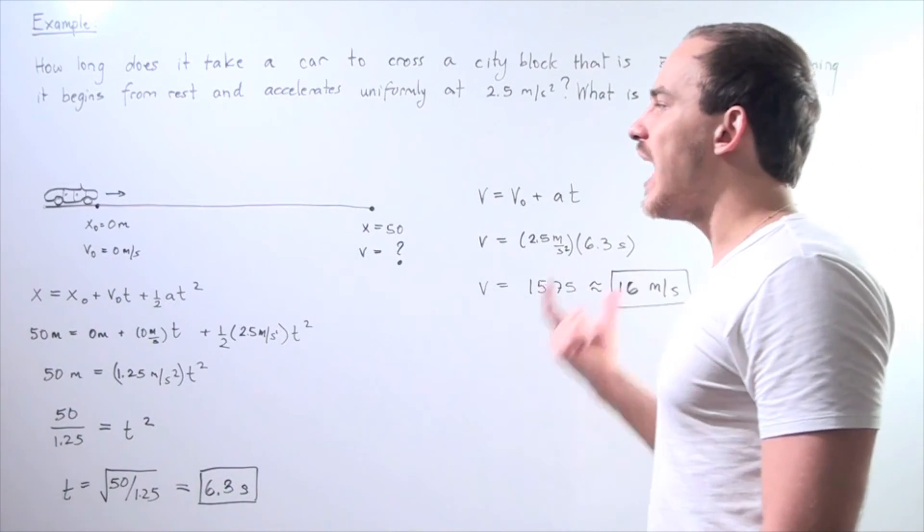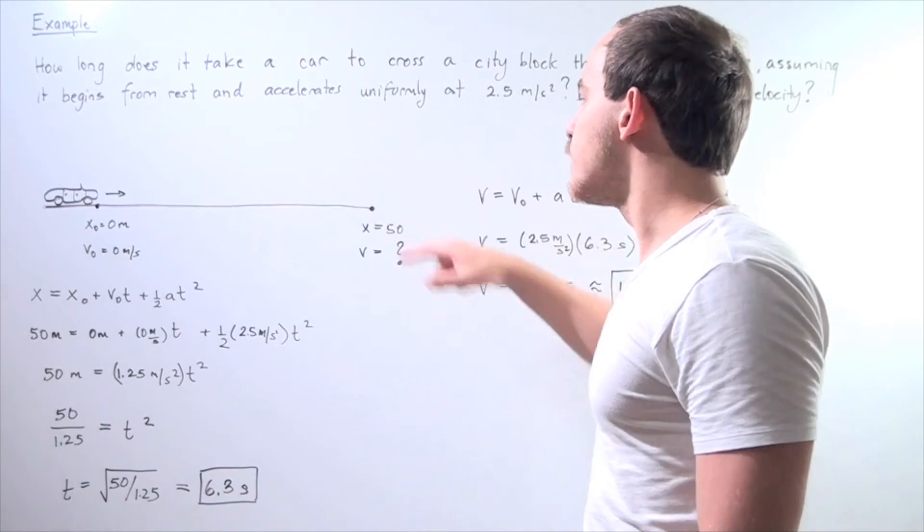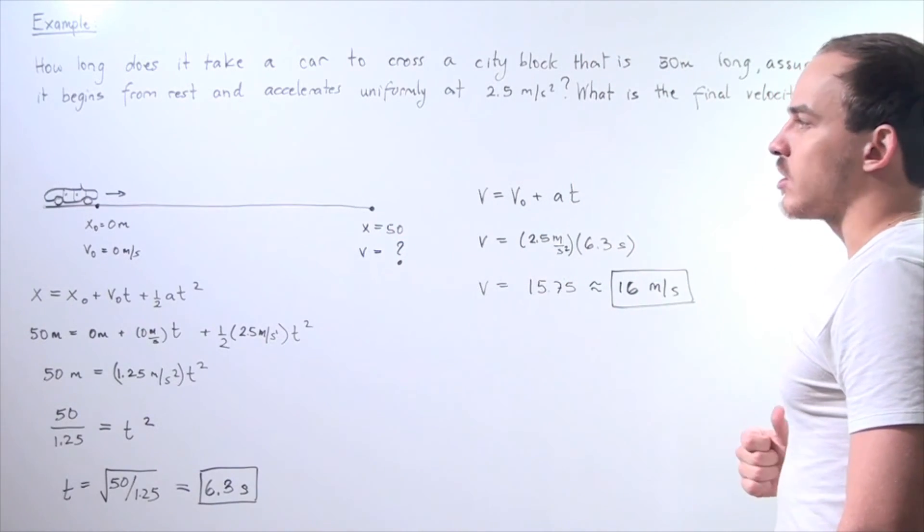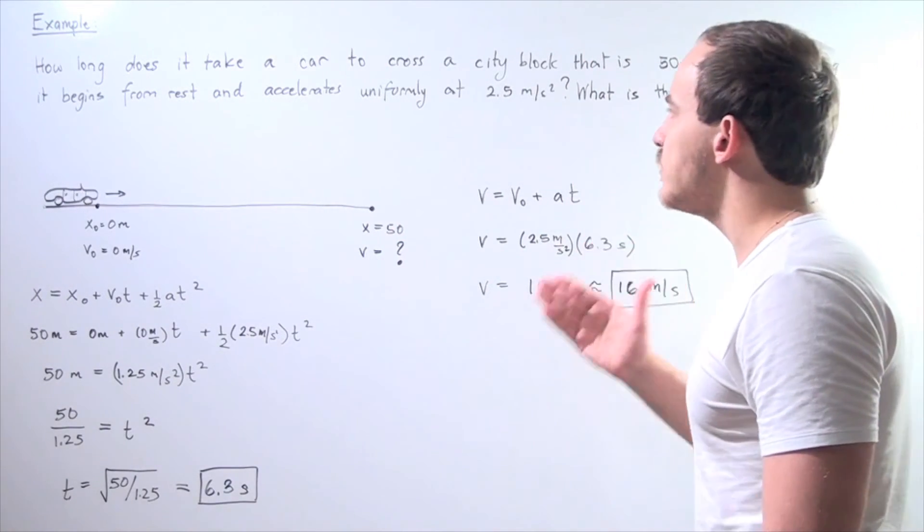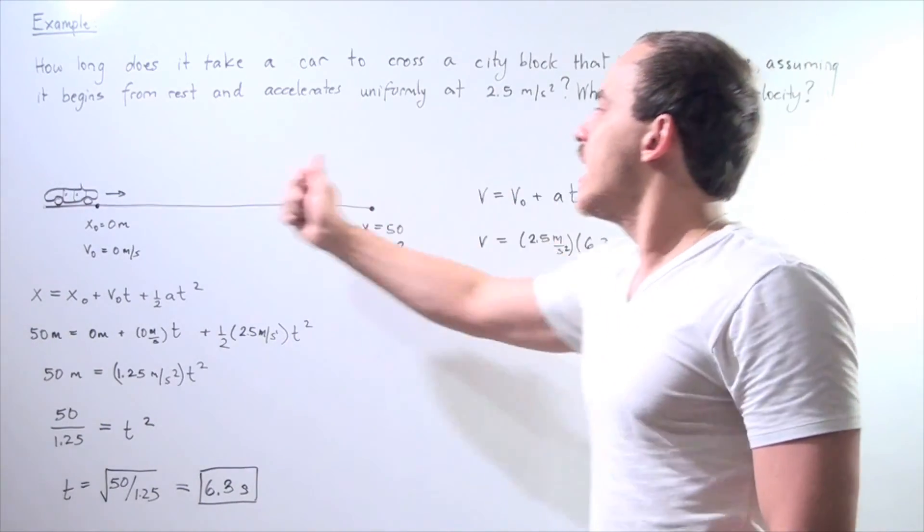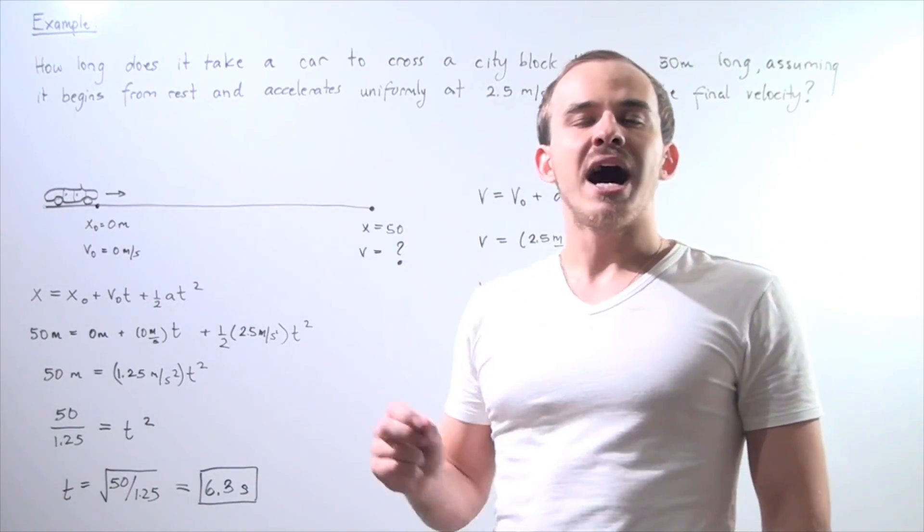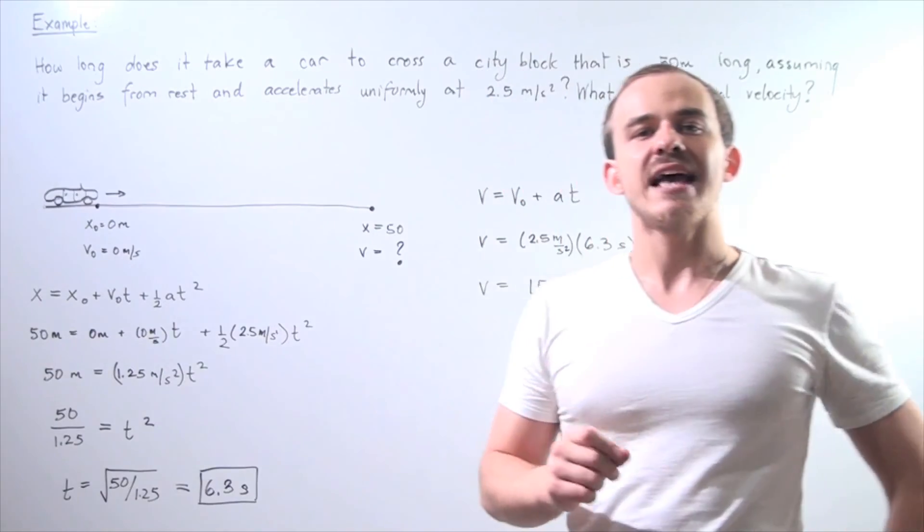That is our final velocity of our car. Now, our direction of our car, our direction of the velocity is in the same direction as acceleration. It's going this way in a positive direction along our x axis.